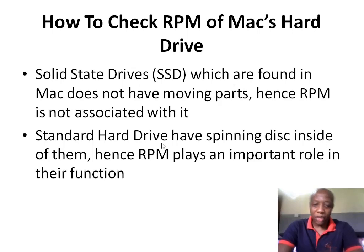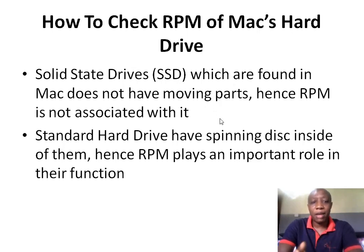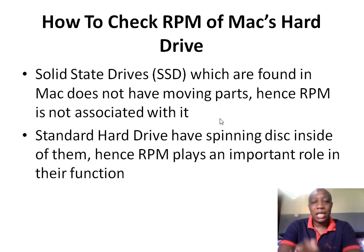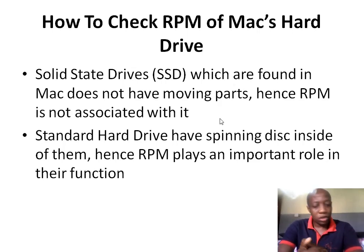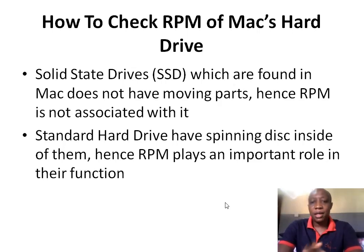I would like to make things clear before I proceed. For Mac or MacBook, the kind of hard drive you find is a solid state drive — SSD. Solid state drives are found in MacBooks and they don't have moving parts inside of them, hence RPM rate is not associated with them. So if you've been searching for the RPM rate of your MacBook's hard drive, you're doing it wrong. Other PCs from HP, Acer and the rest have standard hard drives with spinning disks inside, and hence RPM rates play an important role in their function.